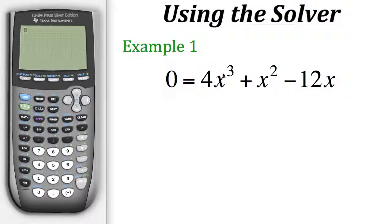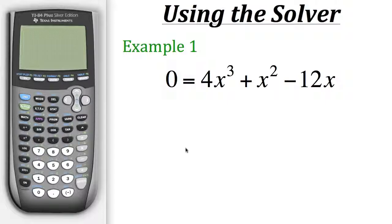Since we're working with a third degree polynomial, we can potentially have up to three solutions, or three different values for our x variable. When using the solver feature on the calculator, it can only give us one answer at a time. Now let's try to use the solver to find our x values so you can see what I mean.